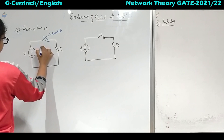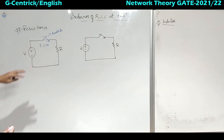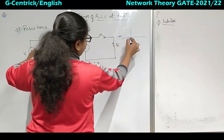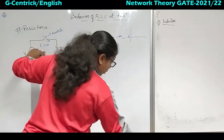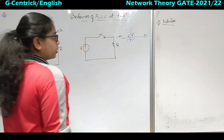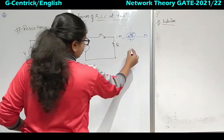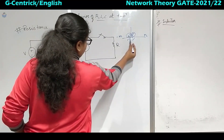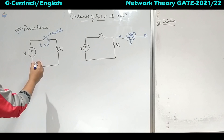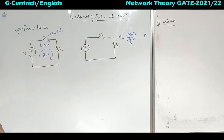We will take t=0 as just before closing the switch. On the time axis, from minus infinity to 0 minus, then 0 plus, and here it will be infinity. We are going to analyze this part, especially at 0+. In this circuit we are talking about 0 minus — just before closing the switch is called t=0 minus. Some amount of current will be flowing, which we take as I(0-).